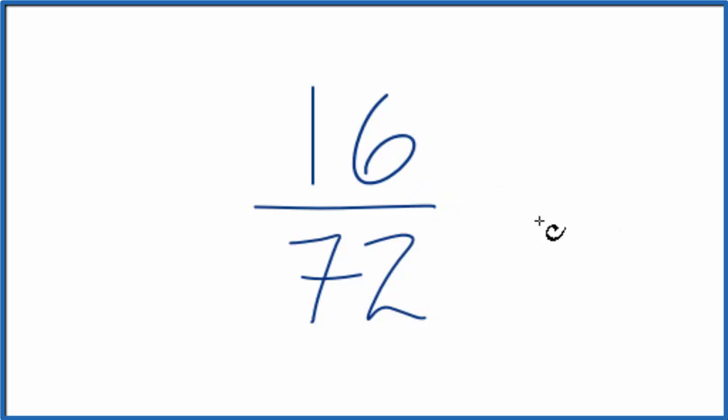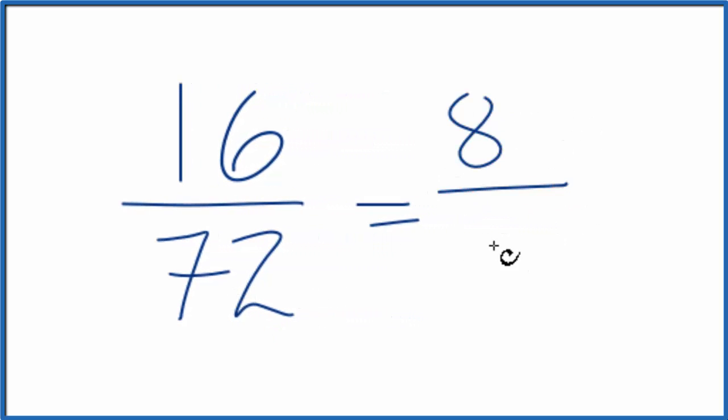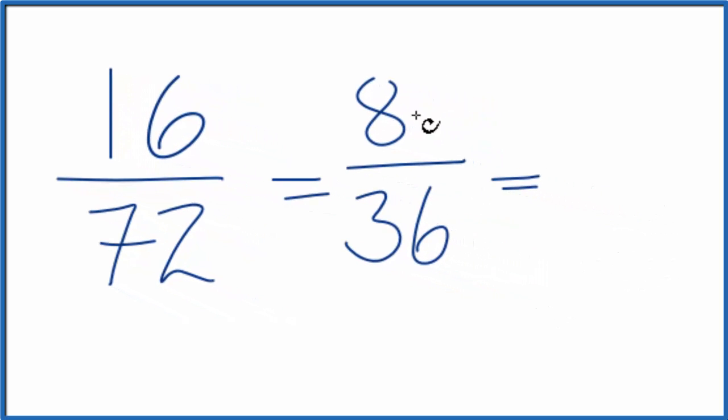16 divided by 2 is 8, and 72 divided by 2 is 36. So this is a little more manageable. 8 doesn't go into 36 evenly, so I'm just going to divide by 2 again. 8 divided by 2 is 4, 36 divided by 2 is 18.